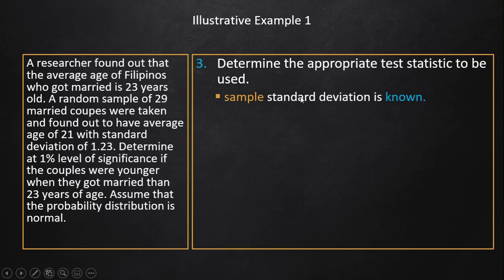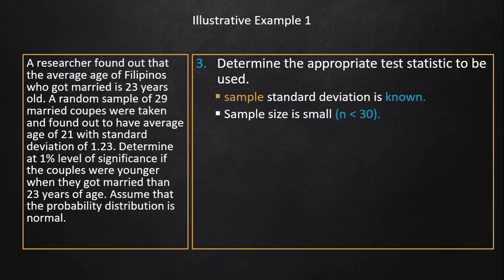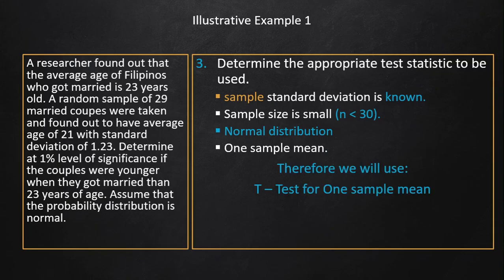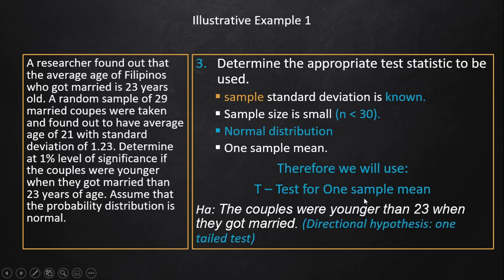We now determine the appropriate test statistic. The sample standard deviation is known, from the 29 married couples. The sample size is 29, which is less than 30 (small). We assume normal distribution, and this is a one sample mean problem — so we use the t-test for one sample mean. We also use a one-tailed test because the alternative hypothesis is a directional hypothesis.